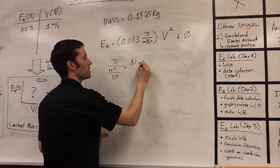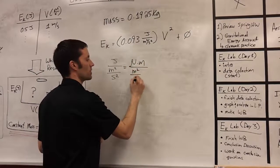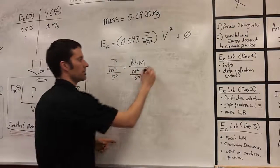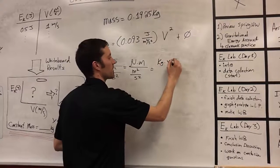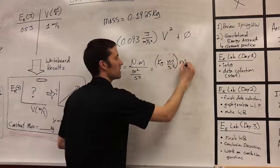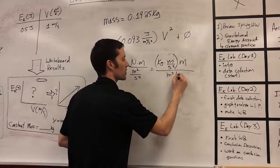You've got a joule divided by a meter squared over second squared. A joule is a newton times a meter. So we've got still divided by meters squared over seconds squared. And a newton is a kilogram times a meter divided by seconds squared. So you have a newton times a meter, all divided by meters squared over seconds squared.